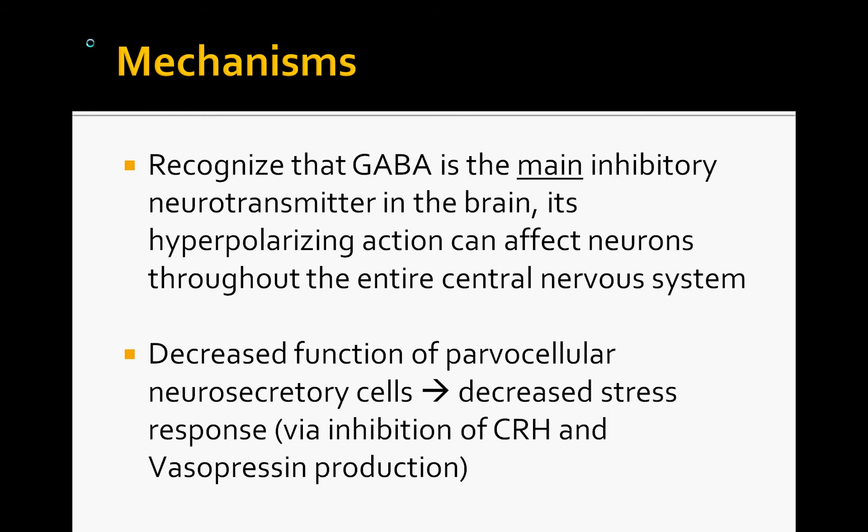GABA is the main inhibitory neurotransmitter of the brain, found throughout the entire central nervous system. When discussing the decreased function of the parvocellular neurosecretory cells, that essentially gives you a decreased stress response — inhibition of corticotropin-releasing hormone and vasopressin, which are major players in the stress response, decreases overall stress response and decreases anxiety.